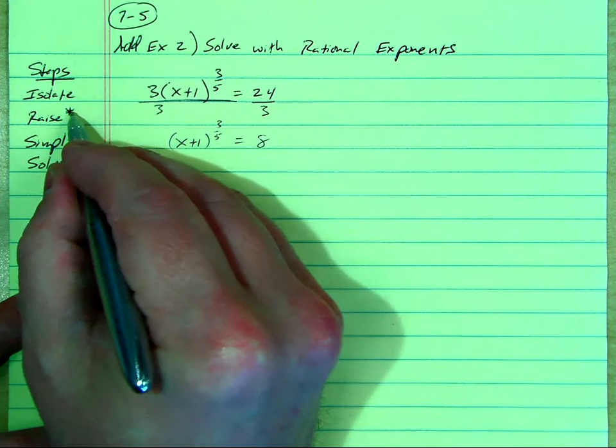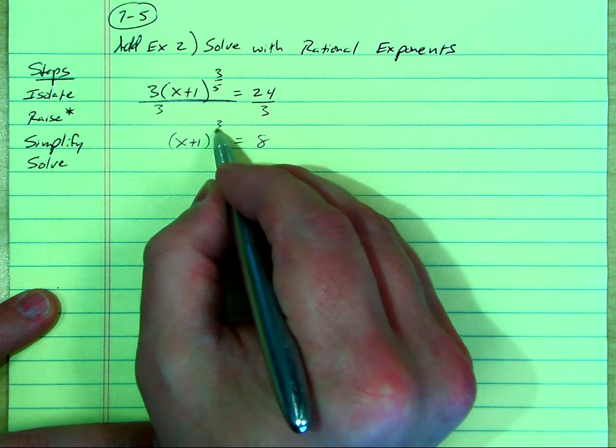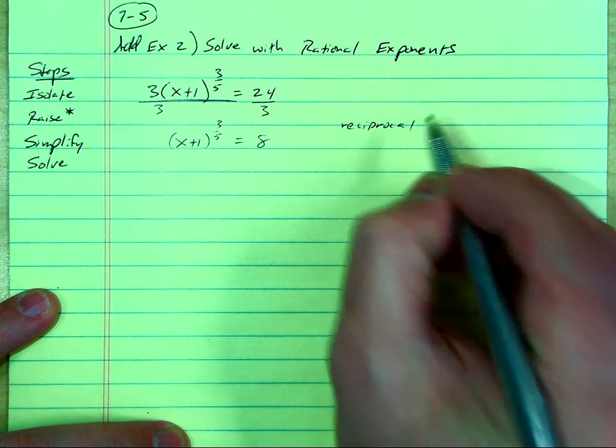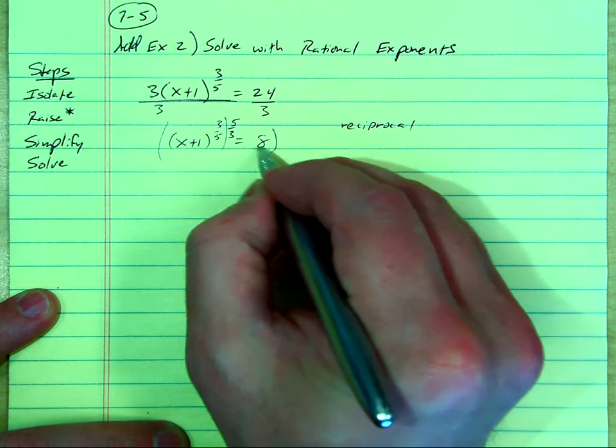Now, when I say raise to a power, what is the power supposed to look like? The good technique is always to use the reciprocal of that power. So I'm going to write reciprocal right there. So I'm going to raise both sides to the 5 over 3 power.